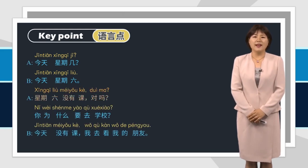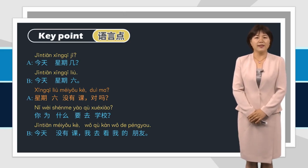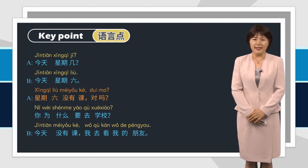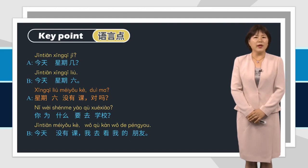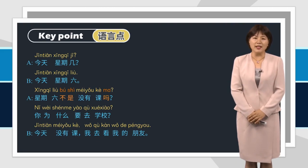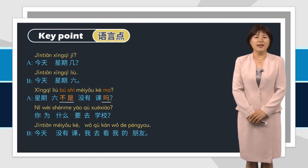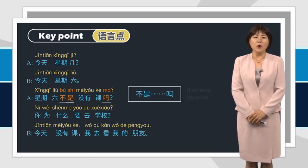In this dialogue, the man says 星期六没有课，对吗？ — We don't have classes on Saturday, right? We can infer that he knows they don't have classes on Saturday; he just wants to remind the woman or show his confusion. We can use another sentence structure: 星期六不是没有课吗？